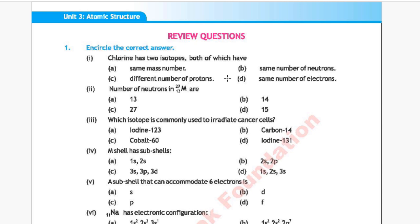Next chapter is Atomic Structure. Question 1: Chlorine has two isotopes, both of which have — Option A: same mass number, Option B: same number of neutrons, Option C: different number of protons, Option D: same number of electrons. The correct answer is Option D, same number of electrons.